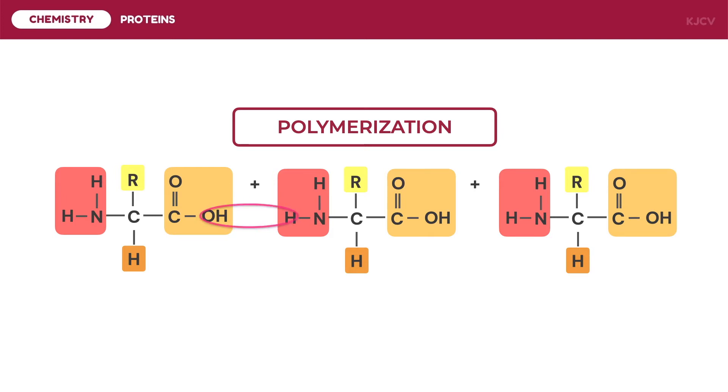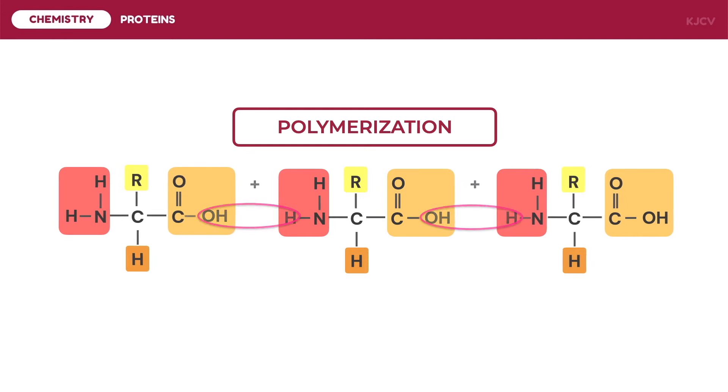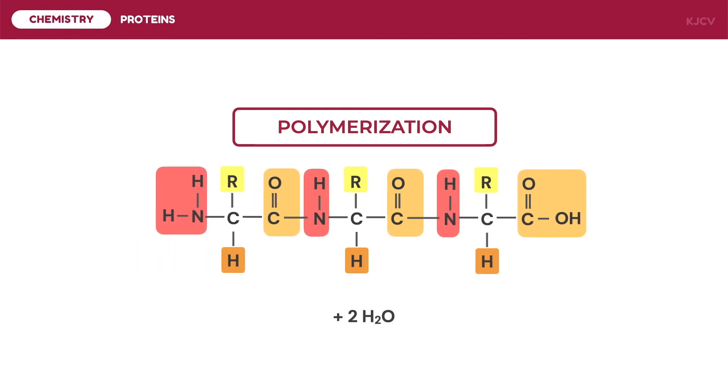The hydroxyl group of the carboxyl group will form water with the one hydrogen atom of the amino group. This will happen for every adjacent amino acids. Once the water molecules are formed and removed, the amino acids will form a polypeptide chain.